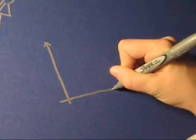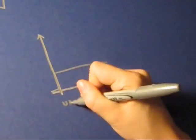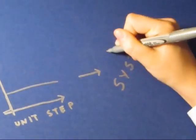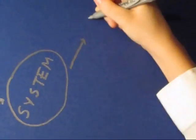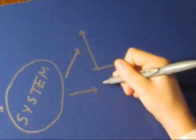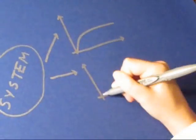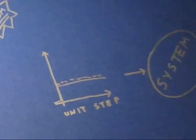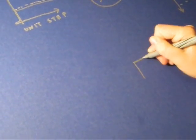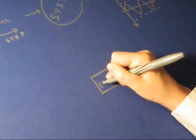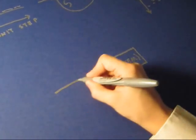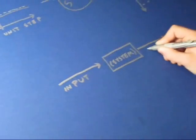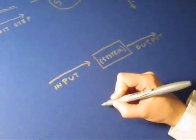BIBO stands for bounded input, bounded output. The input is a unit step, which is a y value of 1 for infinity, and it is input to a system. If the resulting response signals do not have y values going to infinity, they are bounded output. To show this as a block diagram, we draw a black box which represents the system — except our black box is silver. We will draw the input as an arrow going into the black box and the output coming out.